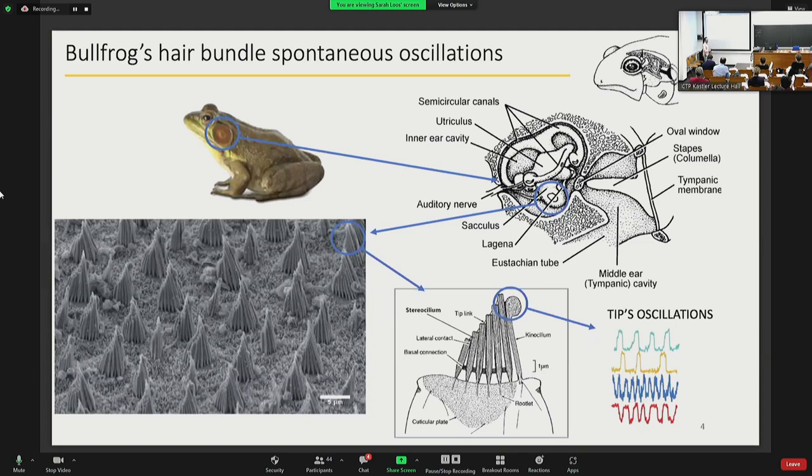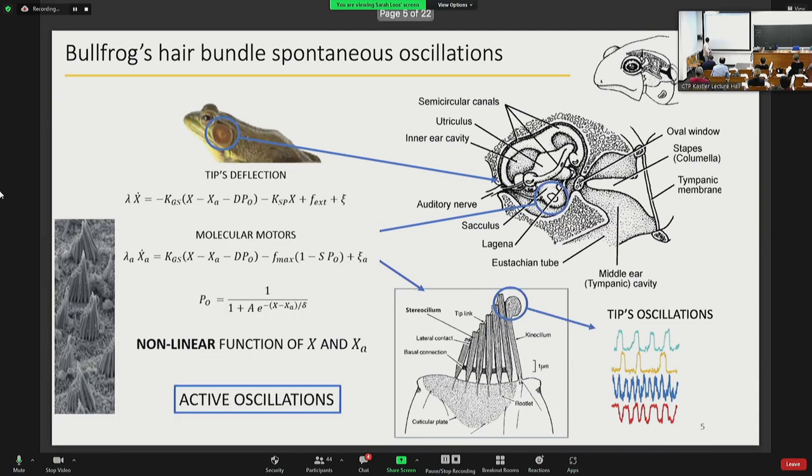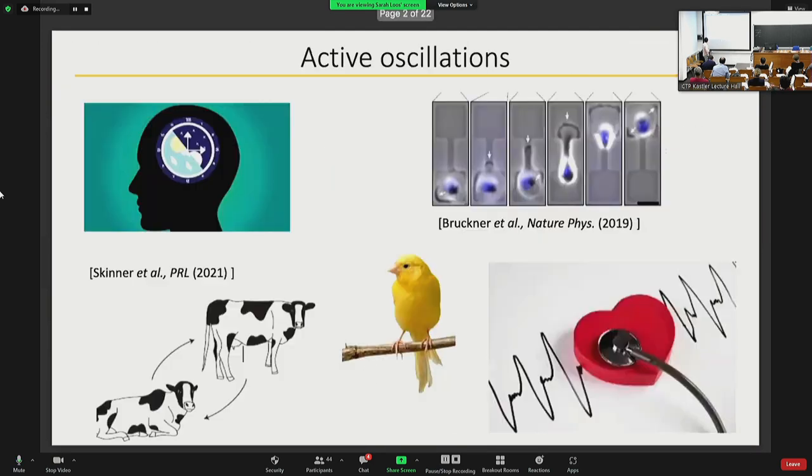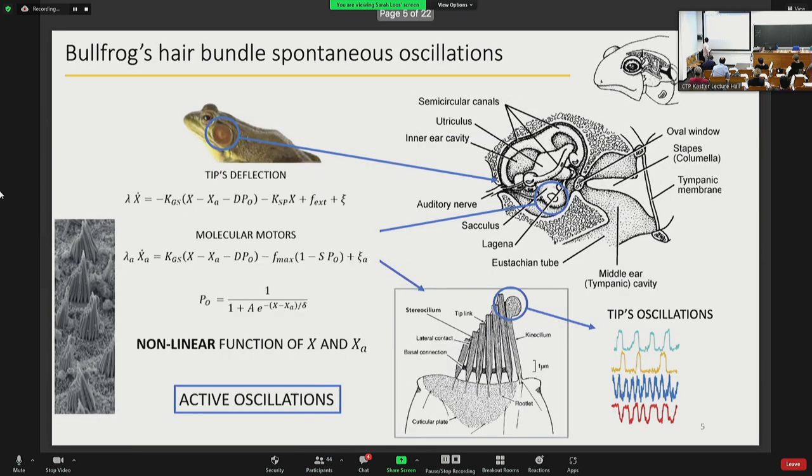Here are displayed some typical oscillating trajectories of the system. Usually the description of this type of system relies on microscopic mean field theory with non-linear and coupled differential equations, very complicated stuff.